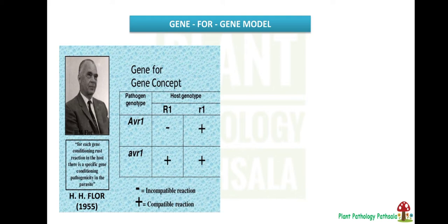According to this hypothesis, for each gene conditioning rust disease in the host, there is a specific gene conditioning the pathogenicity in the parasite. That is, for each R gene in the plant, there is a corresponding AVR gene in the pathogen for resistance, whereas for susceptibility, there is a corresponding virulence gene in the pathogen.